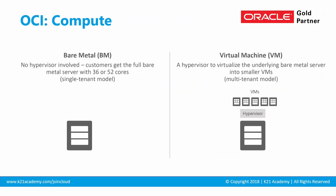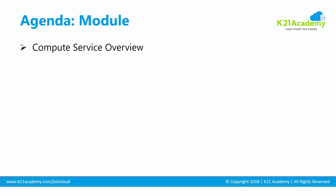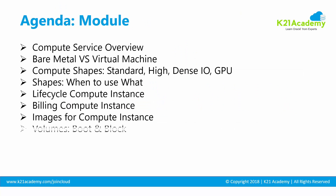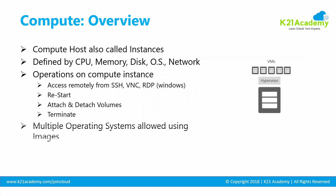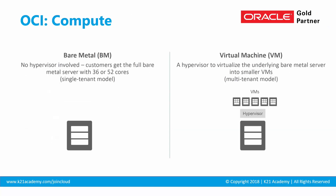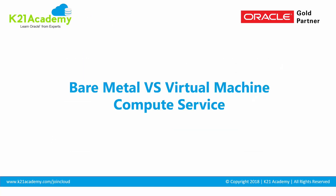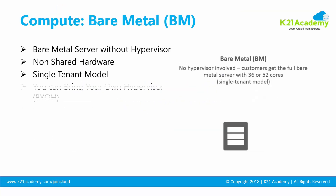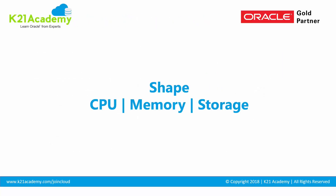In the next lesson we are going to look at shapes — basically CPU, memory, and storage — and what different types of shapes are available for virtual machine as well as bare metal. But before that, let's quickly recap what we covered in this first lesson: we started with the agenda, looked at a high-level overview of compute and all the operations you can do, then covered bare metal and virtual machine. Head on to the next lesson where we look at compute shapes in OCI.